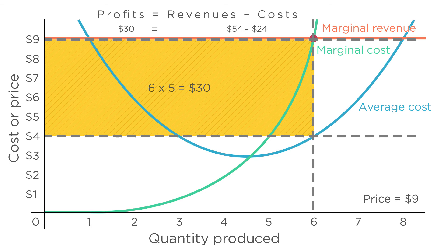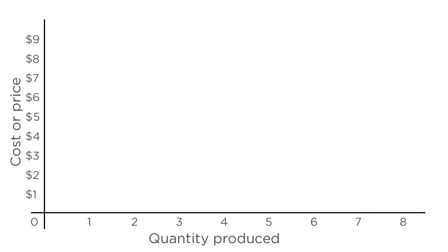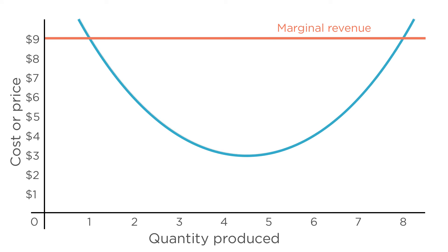So let's draw a new graph. Let's keep the price the same, so marginal revenue is still $9. But let's assume the firm's costs have changed. The government just caught the firm cheating on its taxes. So as punishment, the government is forcing the company to pay a $1 fine for each unit it sells. That means average costs shift up by $1.